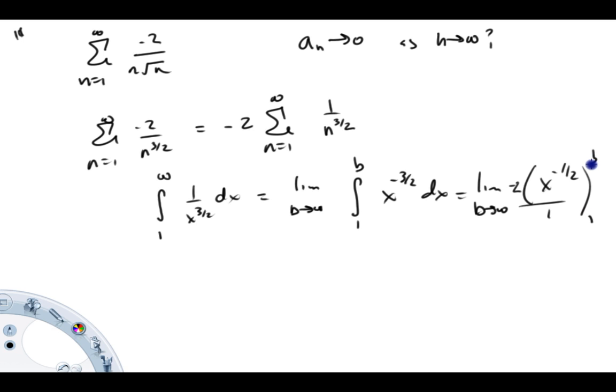And the limit as b goes to infinity. I'm going to go ahead now and take this minus sign and just absorb this into the limits. So this is going to equal limit as b goes to infinity of 2 times 1 over root 1 minus 1 over root b.